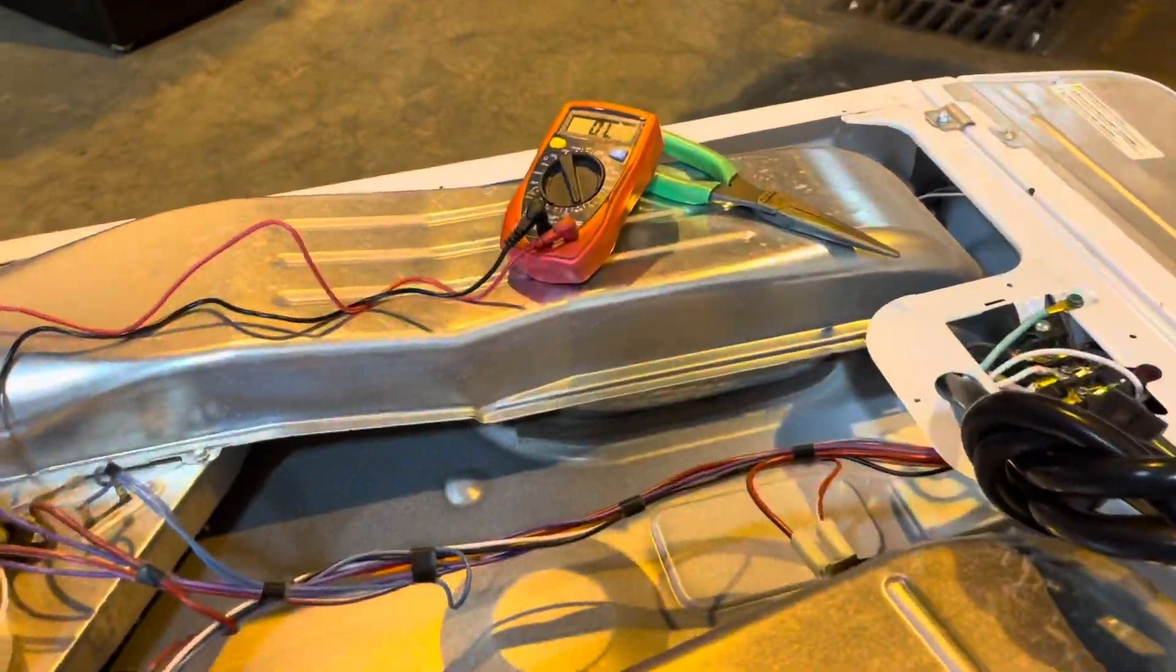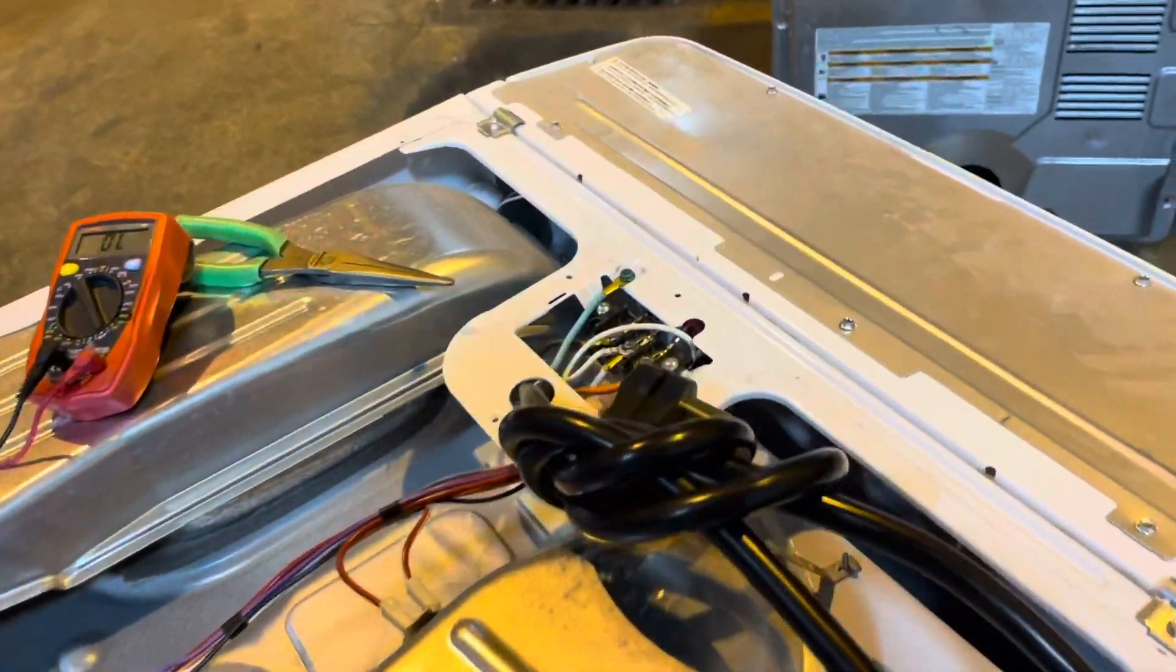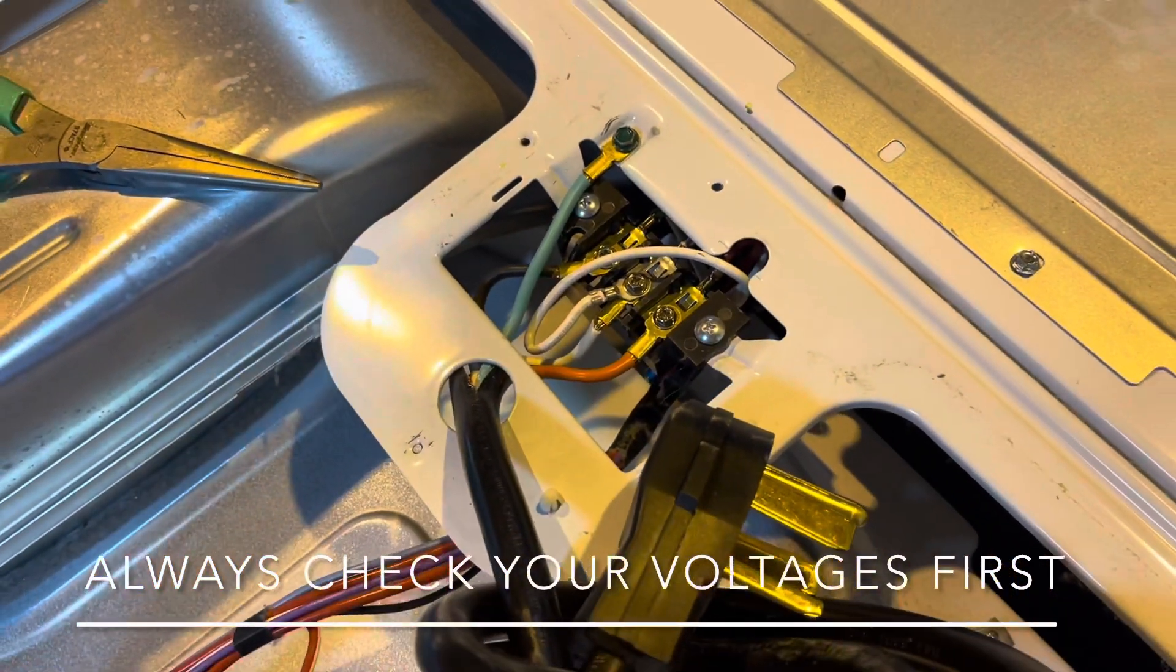Alright guys, we got a dryer here and this dryer is absolutely dead. No power, not turning on or anything. So we took the first steps of making sure that we're getting the proper voltage to all of our connectors here and from the outlet on the wall. That's all good so we know that there's another problem.